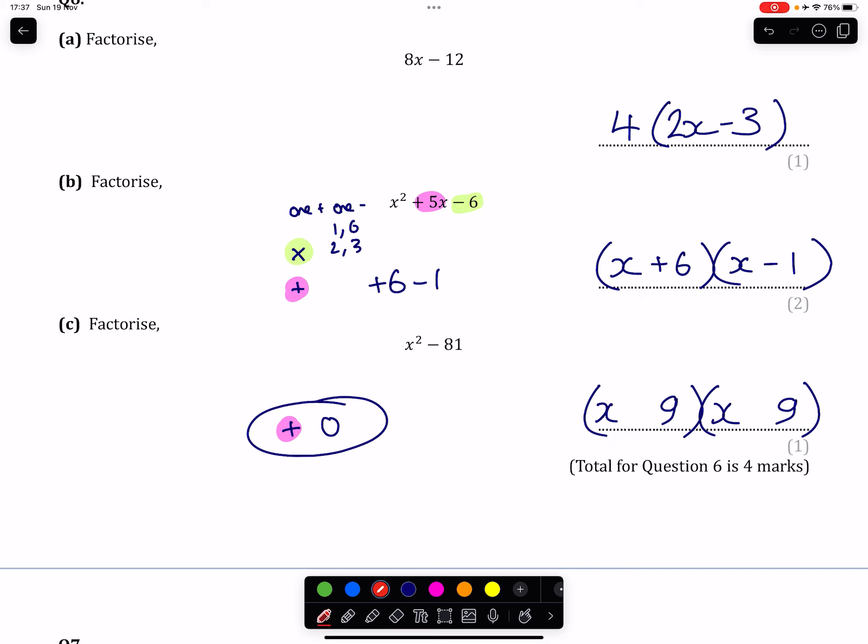And the reason why we add to get 0 is because one of these 9s is a positive and one of these 9s is a negative, which means if you imagine breaking it out, these two terms in the middle cancel.